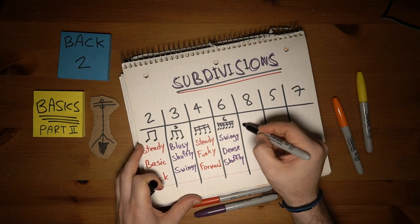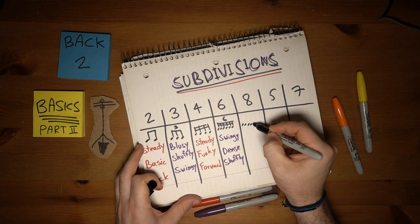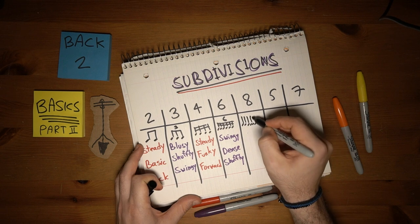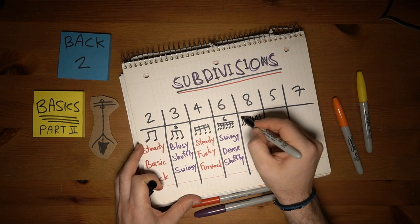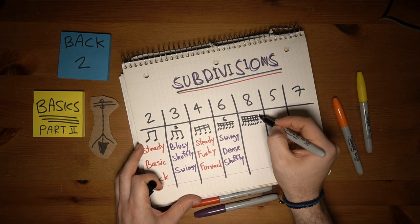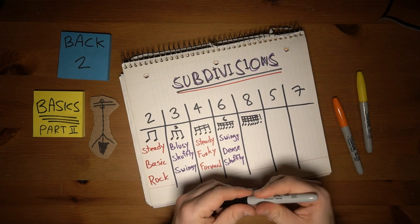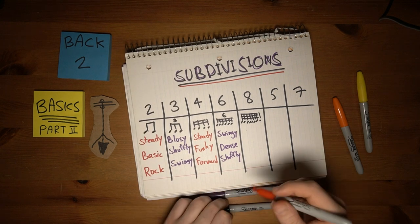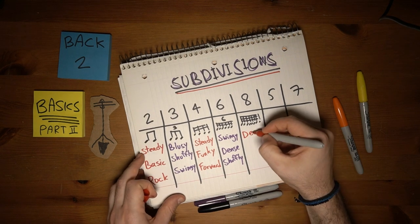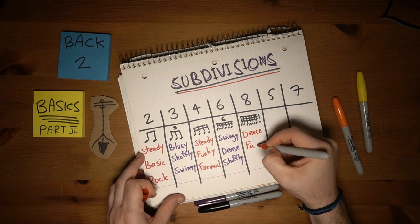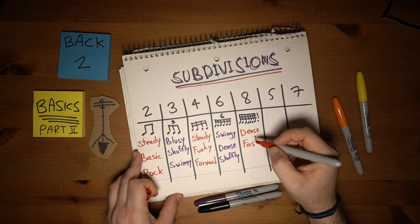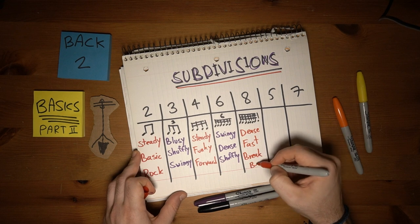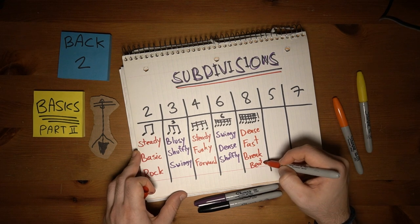The next subdivision is dividing each quarter note into 8 equal pieces — this is called 32nd notes. These are very dense, very fast, and have like a breakbeat kind of vibe.